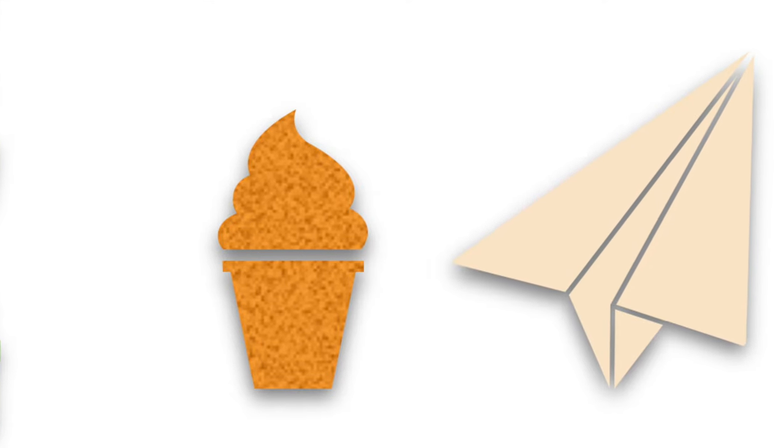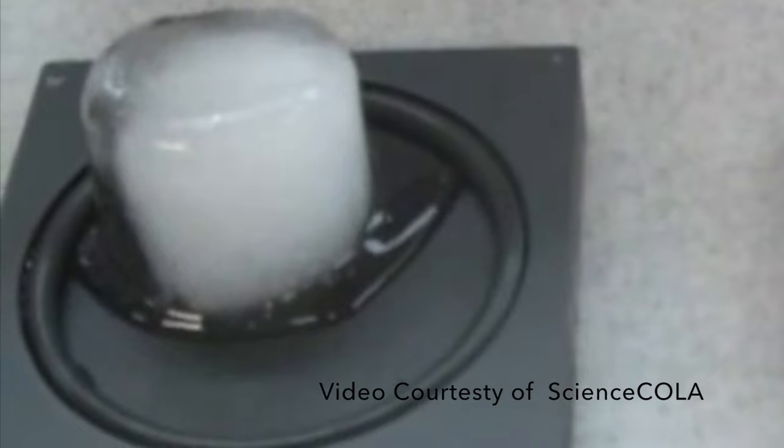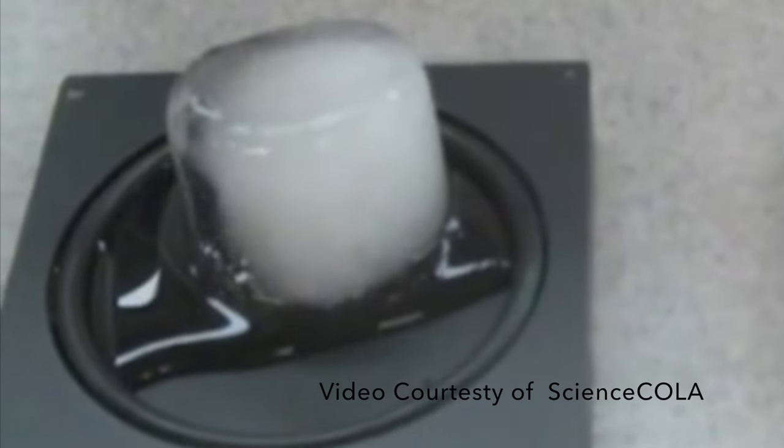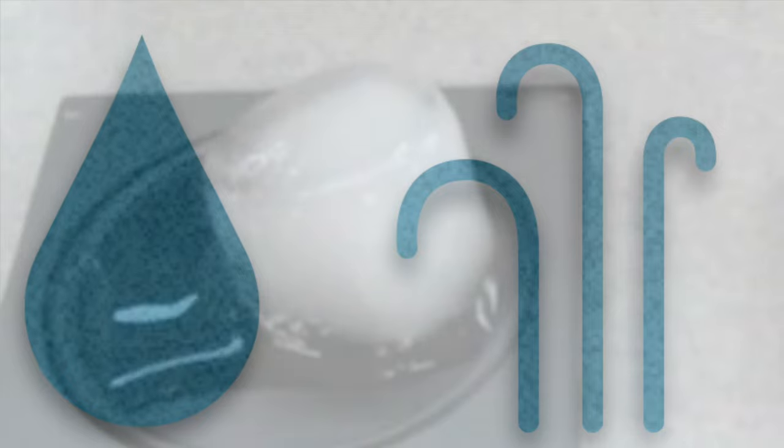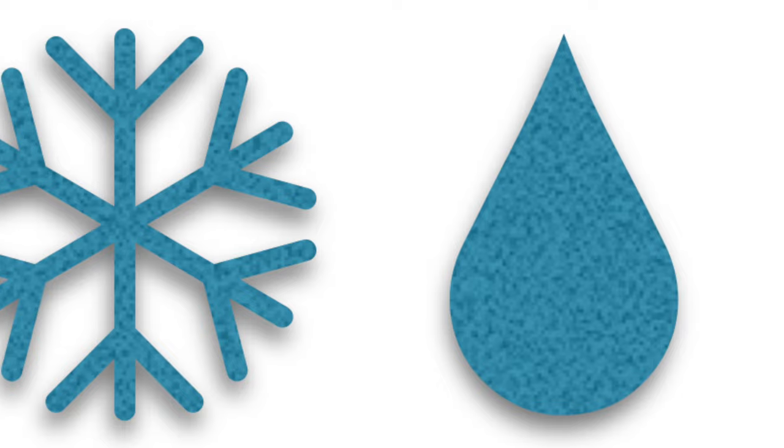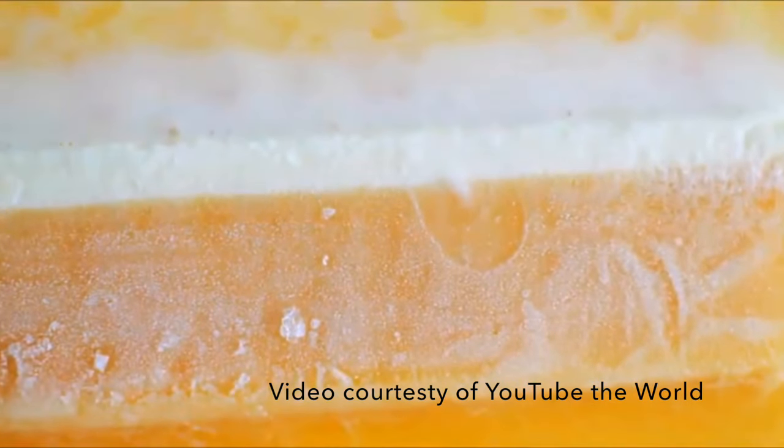Physical changes occur in matter that can cause it to change its form or physical appearance. Solids can change to liquids and then into gas when heat is applied. When cooled, gas can turn to liquid and liquid can turn to solid.